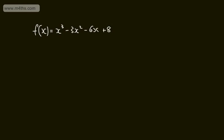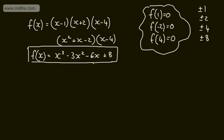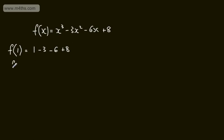Let's check that's written correctly. We want to find a linear factor, so we try f(1): that gives 1 minus 3 minus 6 plus 8, which is 9 minus 9. So f(1) equals 0, and therefore x minus 1 is a factor.